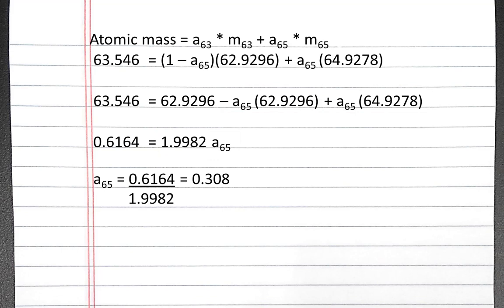Solving for the abundance of 65, we'll have 0.6164 divided by 1.9982, which is 0.308. So this is the natural abundance of copper-65.